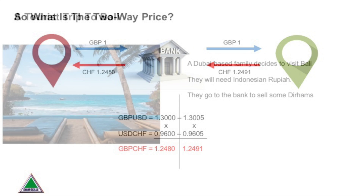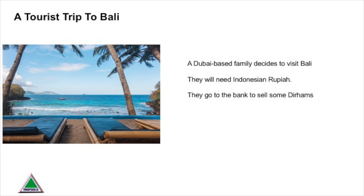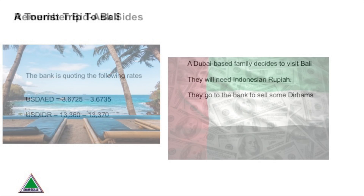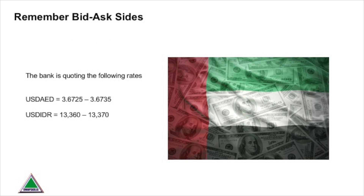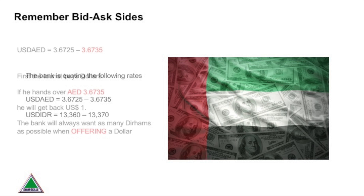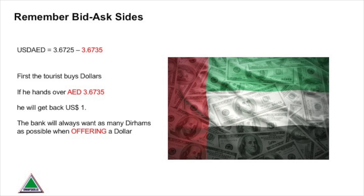Let's look at another example. Here we have a Dubai-based family that wants to go to Bali on holiday. They go to the bank to sell some dirhams, which is the currency used in the UAE, and the bank is quoting two-way rates on the dirham and the Indonesian rupiah, which is what's used in Bali. First, the tourist buys dollars, for which he will have to hand over 3.6735 dirhams for every dollar he wants. The bank will always get as many dirhams as possible when offering the dollar.